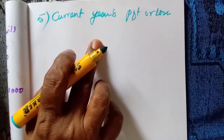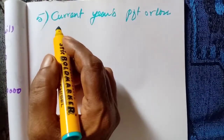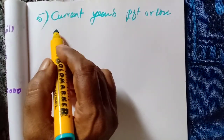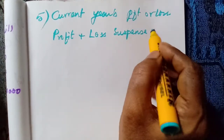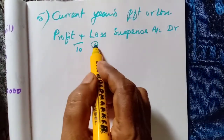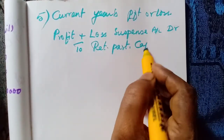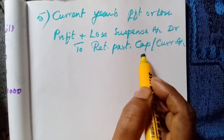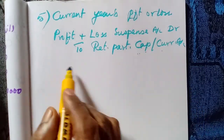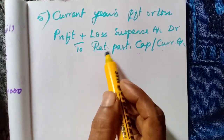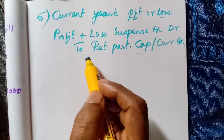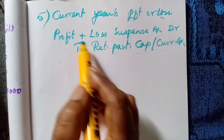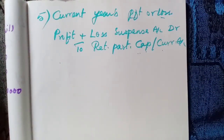If a partner retires in between the year, till the date of retirement or death, the partner's share of profit should be transferred to his capital account or current account. For that, we need to make an entry. If it is profit, profit and loss suspense account is debited to the retiring partner's capital account or current account. If it is loss, the reverse entry will be prepared: retiring partner's capital or current account debited to profit and loss suspense account.